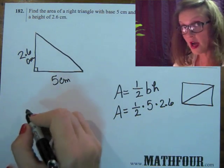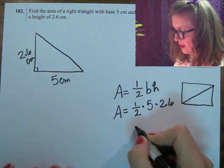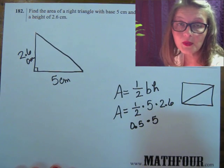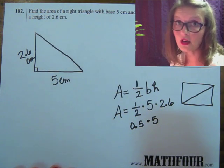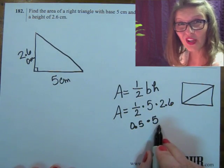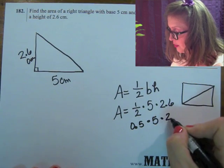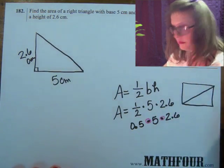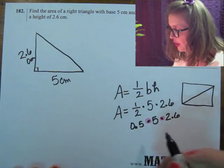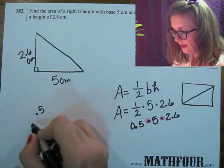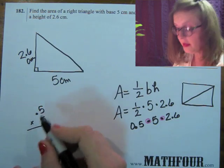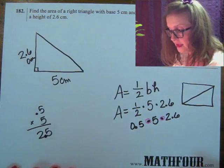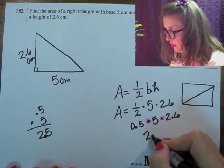I'm not a decimal person, but I will do this. This is the same as .5 times 5. Be real careful about where your decimals are and where your multiplication dots are — it's going to get a little squirrely if you're not careful. Times 2.6. In fact, I'm going to put a pink circle around the multiplication. So .5 times 5: multiply them like regular, count how many decimal places we have — we have one — so .5 times 5 is 2.5.